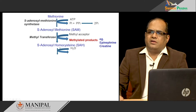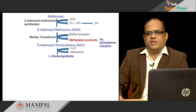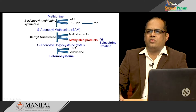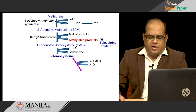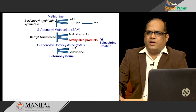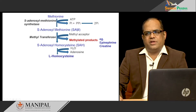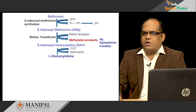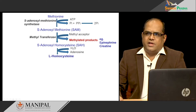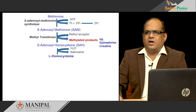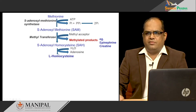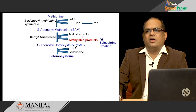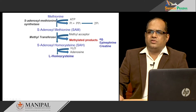In the next reaction, the adenosine group is removed from S-adenosyl homocysteine to yield homocysteine. This is an important molecule in the metabolism of methionine. To summarize this sequence: an adenosyl group was added to methionine, then a methyl group was removed, and then the adenosine was removed — so the net result is that methionine is converted to homocysteine by loss of its methyl group.